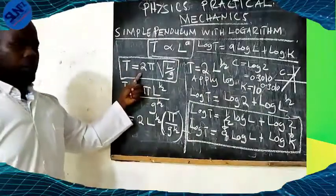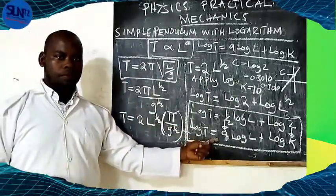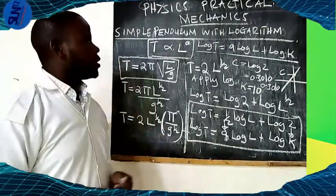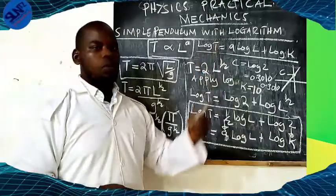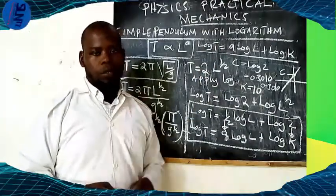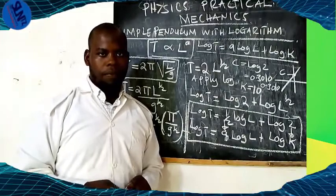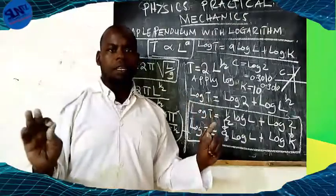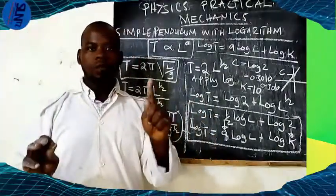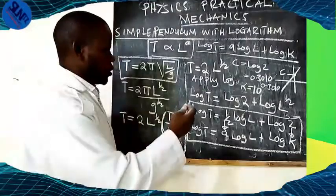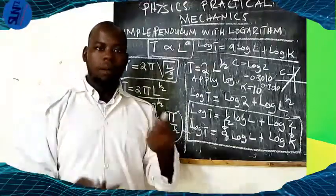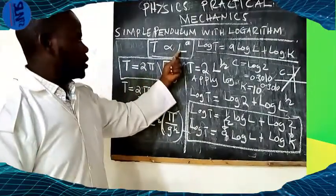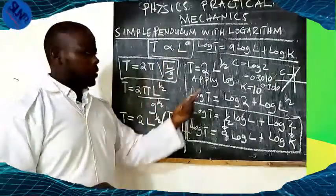By making the comparison of our equation with the general equation, from the general equation of the simple pendulum to the logarithmic form, that is our Mechanics: simple pendulum with the logarithm concept. I think we have understood. The issue is the equation derivation — to see the relationship and the comparison between the logarithm and the general equation.